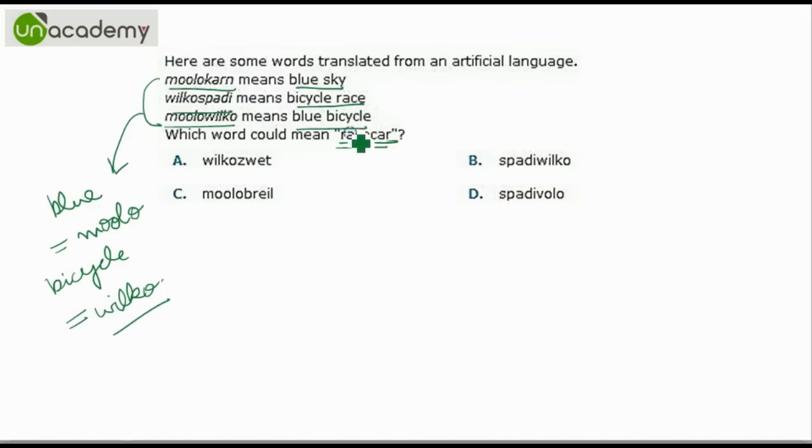So race car race would be S-P-A-D-I. So we will look for the option with S-P-A-D-I. We have two options with S-P-A-D-I. For bicycle we have used W-I-L-K-O. So the remaining one should be the answer. That is this one. V-O-L-O.